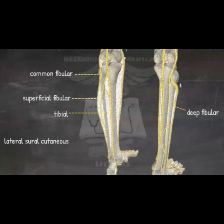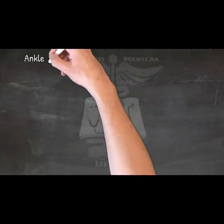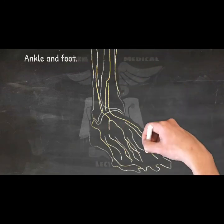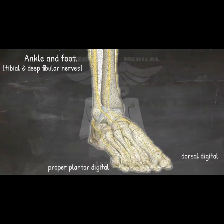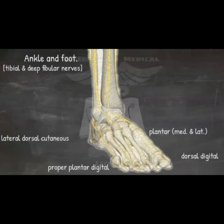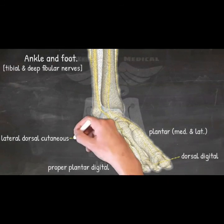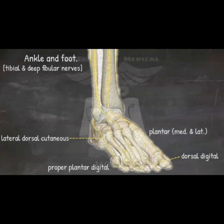The tibial nerve is the second branch of the sciatic nerve and innervates the posterior compartment muscles of the leg: gastrocnemius, popliteus, soleus, plantaris, tibialis posterior, flexor digitorum longus, and flexor hallucis longus. The ankle region is innervated by articular branches of the tibial and deep fibular nerves. Regarding the nerves of the foot, these include the dorsal digital nerves, proper plantar digital nerves, lateral dorsal cutaneous nerve, and plantar nerves. The dorsal digital nerves and proper plantar digital nerves provide innervation to the toes, while the lateral dorsal cutaneous nerve supplies only the skin over the lateral side of the little toe. The plantar nerves are branches of the tibial nerve and innervate the skin of the lateral two toes and sole of the foot, together with the intrinsic muscles of the foot.